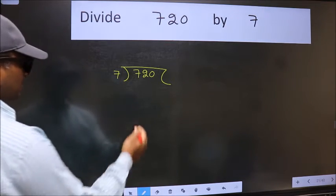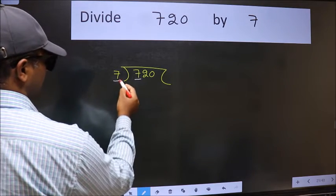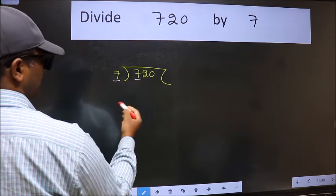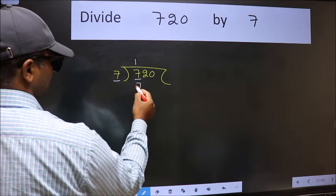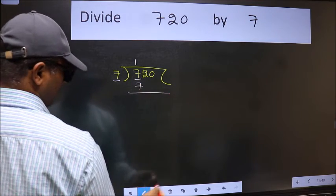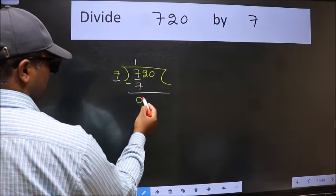Next, here we have 7 and here 7. When do we get 7 in the 7 table? 7 once is 7. Now we should subtract. We get 0.